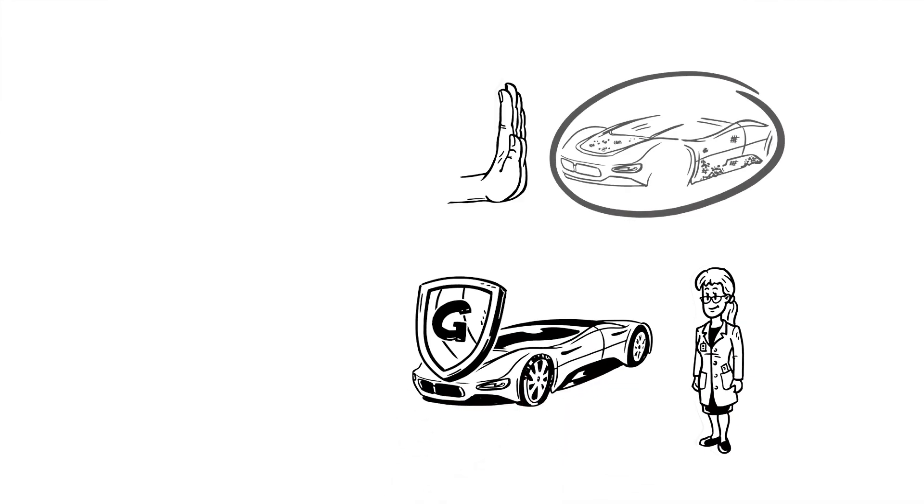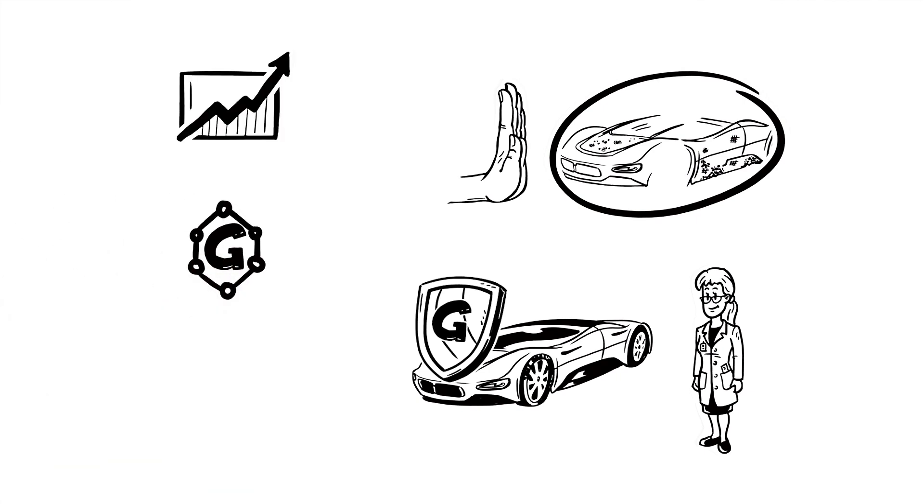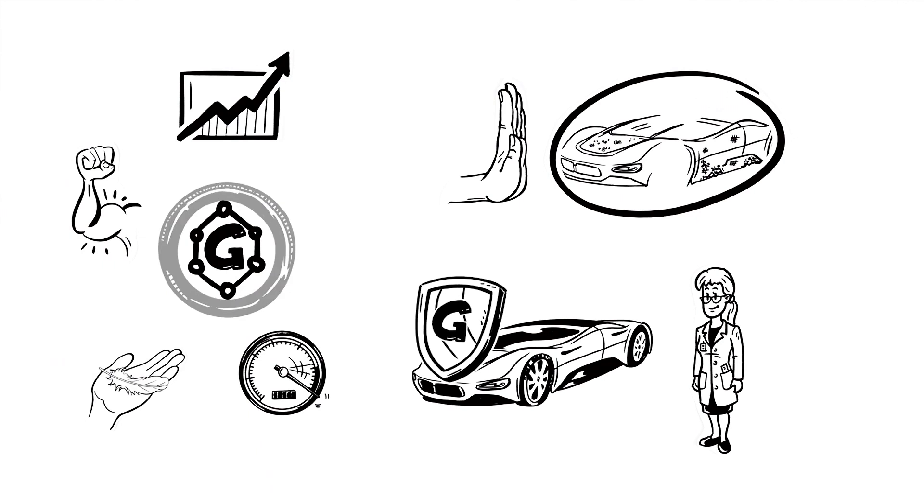Maria could also apply a protective graphene coating to the chassis, enhancing the ability to prevent chips, dents and corrosion. Graphene-enhanced composites have 10-30% improved material properties, making it possible for example to produce faster, lighter and more resistant tires.